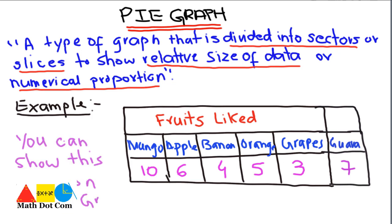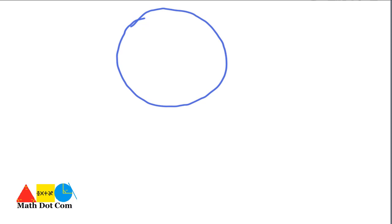Our concern here is not how to draw a pie graph, but just how you can map such information onto a pie graph so that you can easily evaluate useful information from it. By using that data you can draw a pie graph in a circular form having certain sectors. The number of sectors depends on the number of variables — here we have six different types of fruits, so our pie graph must have six sectors.